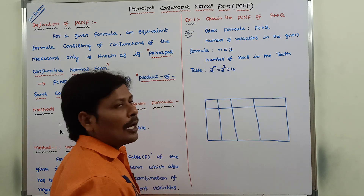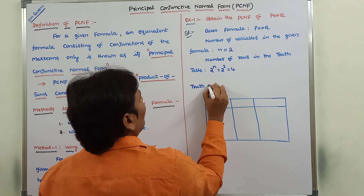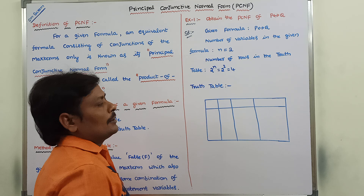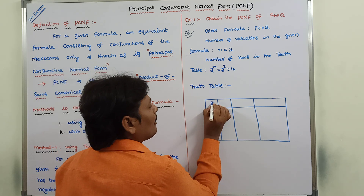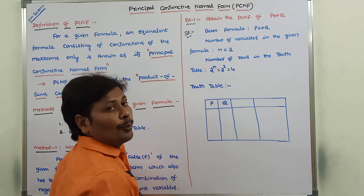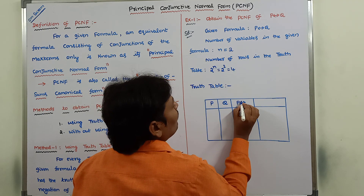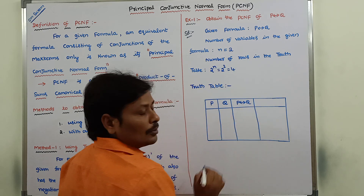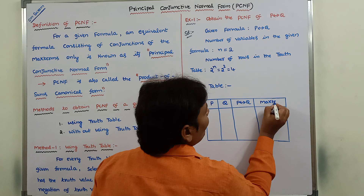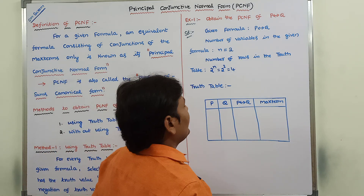Now we have to construct the truth table for the given formula. In the first column, I am writing the statement variable P. In the second column, statement variable Q. After that, the given formula I am writing, that is P biconditional Q. In the last column, I am writing the max term. So, in the case of PCNF, we are using max terms.